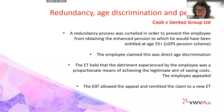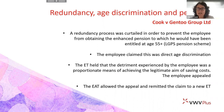The tribunal dismissed his claim that the shortening of the redundancy procedure was direct age discrimination. In direct discrimination claims, you are required to identify a comparator — somebody who was not older — and consider what treatment they were afforded. The tribunal found he hadn't identified a comparator, and in any event would have found any age discrimination to be justified as a proportionate means of achieving a legitimate aim.